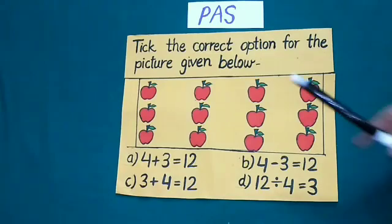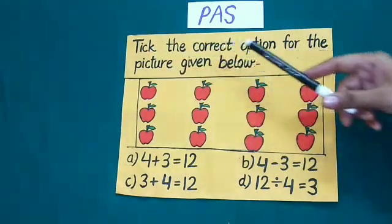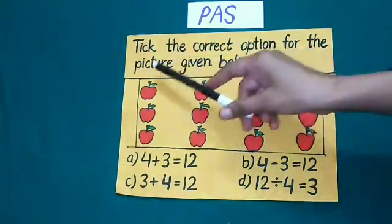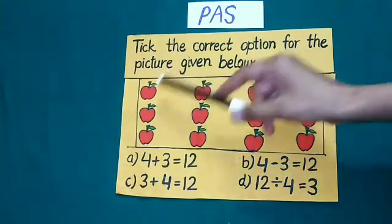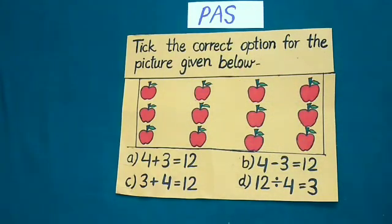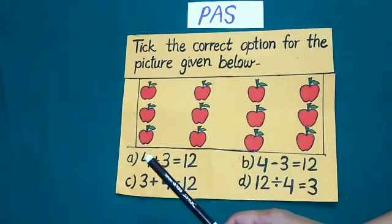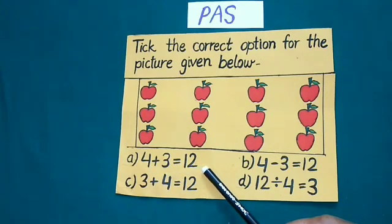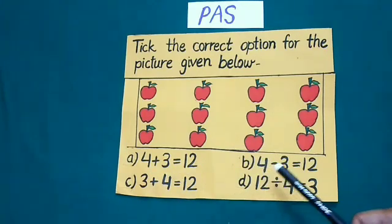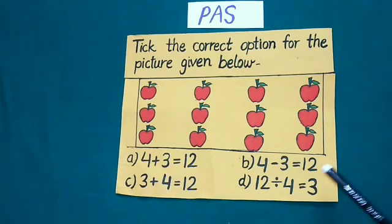Today's question is tick the correct option for the picture given below and here a picture is given. The options are a) 4 plus 3 is equal to 12, b) 4 minus 3 is equal to 12, c) 3 plus 4 is equal to 12, and the option d is 12 divided by 4 is equal to 3.